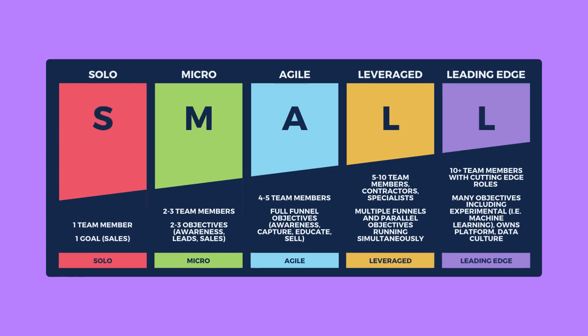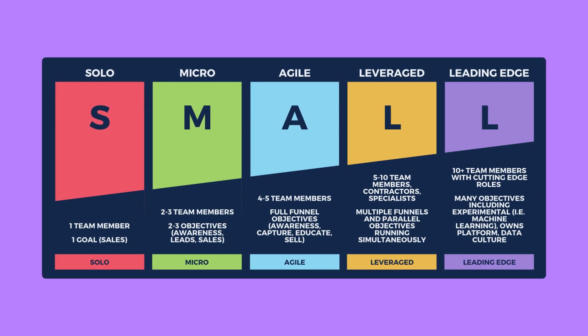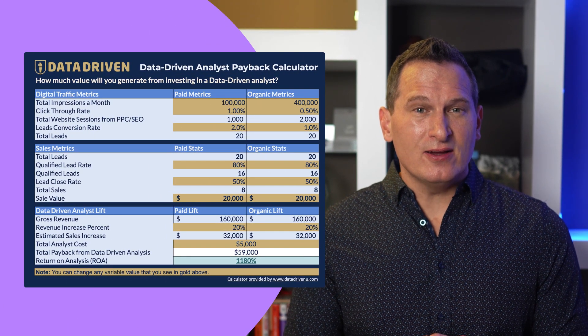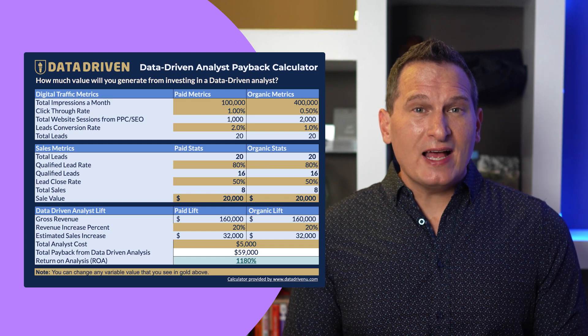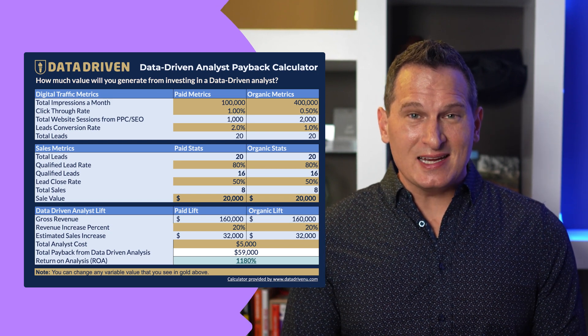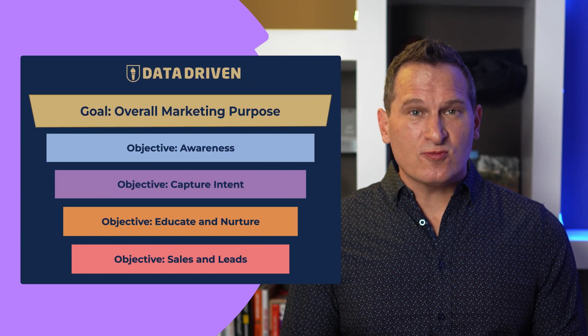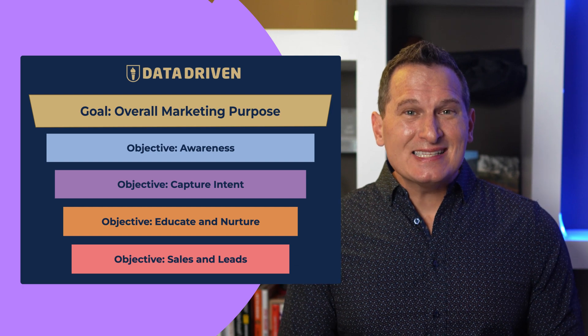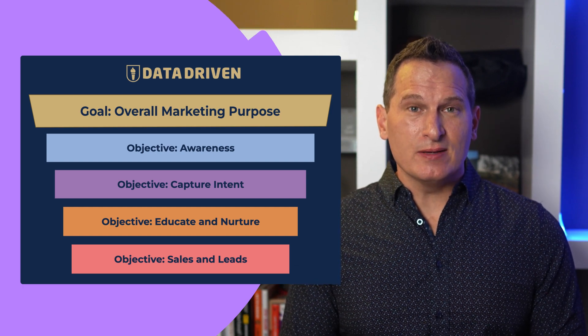The first thing I want to mention is frameworks. We will be discussing three frameworks in this course. First, the small data framework will give you a perspective on what level of analytics you can expect to perform based on the size of your marketing team. Next, an analyst payback calculator that you can use to prove the value of your investment of analytics tools, team members, and techniques. And finally, the ACES framework, which can help you project your marketing funnel performance and set KPIs for all your company objectives.